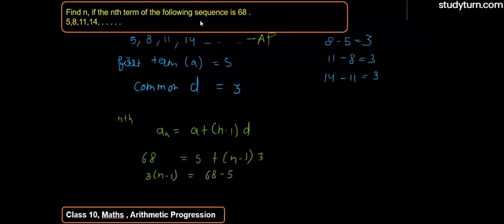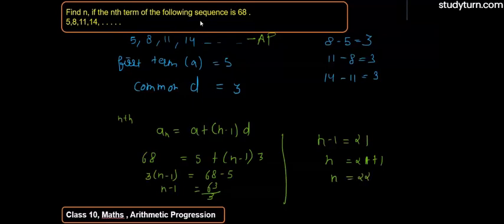So this comes out to be n minus 1 is equal to 63 by 3. So here n minus 1 is equal to 21. So n is equal to 21 plus 1. So n is equal to 22.